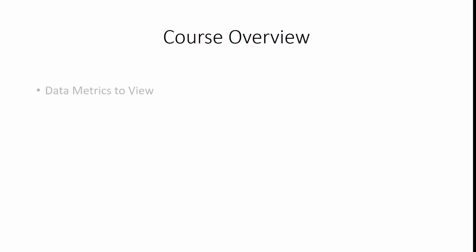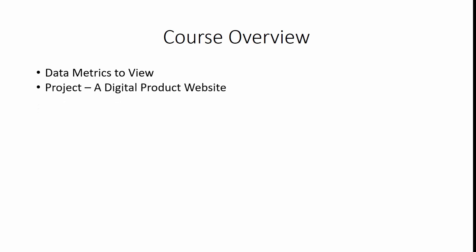Hello and welcome. In this course, we're going to be working through a practical example of how you set up Google Analytics for a digital product. The first thing we're going to do is talk about some of the data metrics that you can actually view and measure throughout the entire process. We're then going to talk about some of the characteristics of setting up a digital product in order to be measured using Google Analytics.